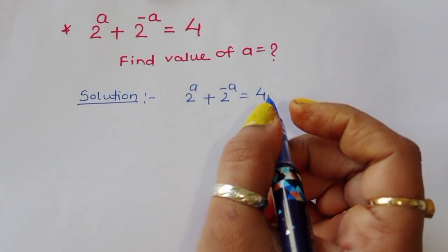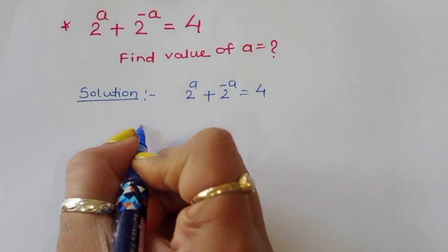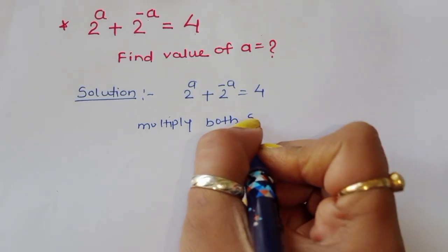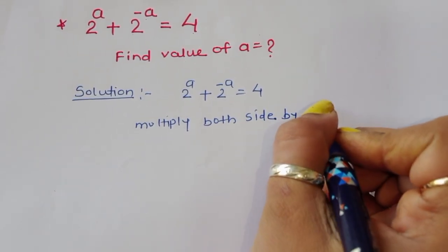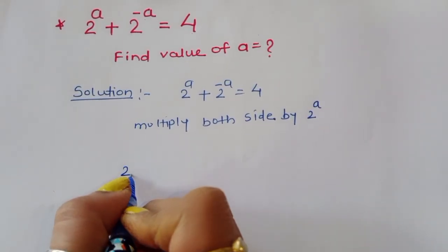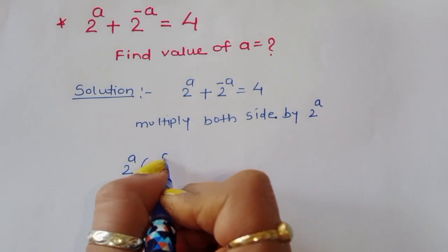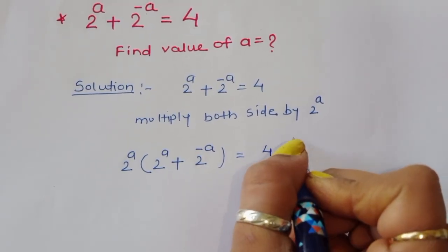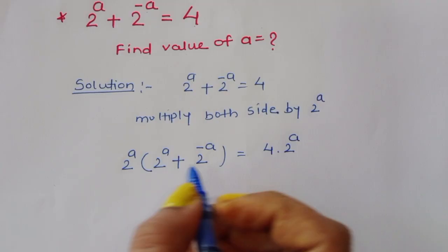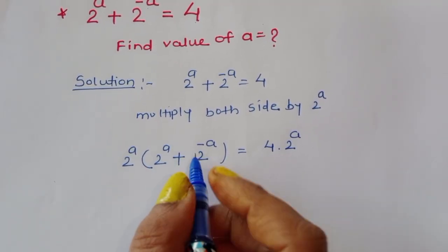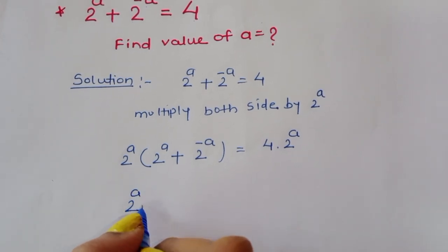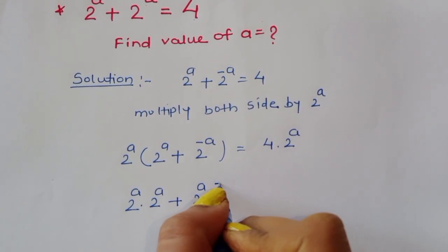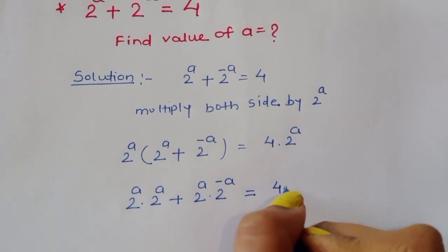We can do one thing here — we can multiply both sides by 2^a. So multiplying both sides by 2^a, we get 2^a times (2^a + 2^(-a)) = 4 times 2^a. Expanding: 2^a times 2^a plus 2^a times 2^(-a) = 4 times 2^a.